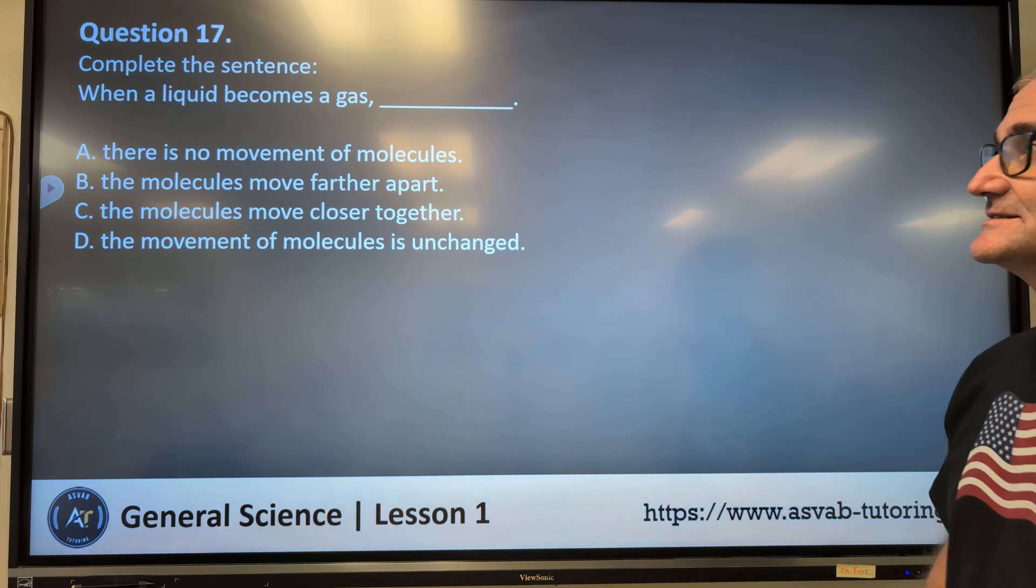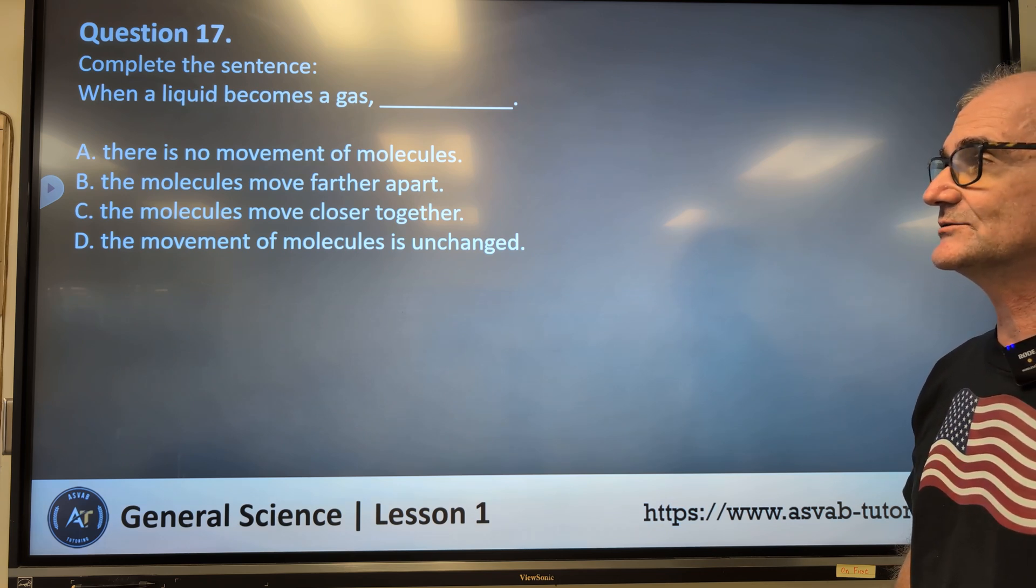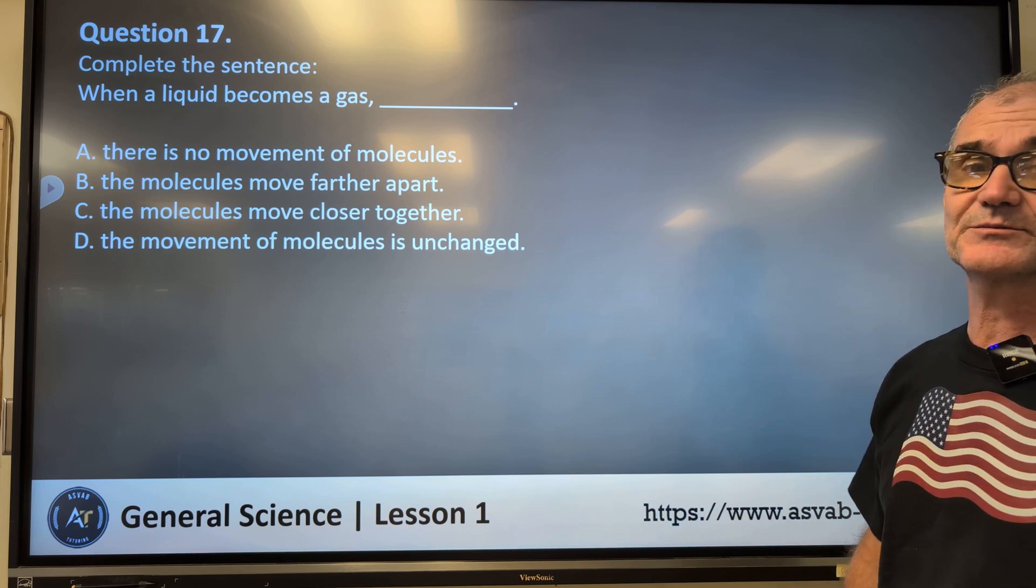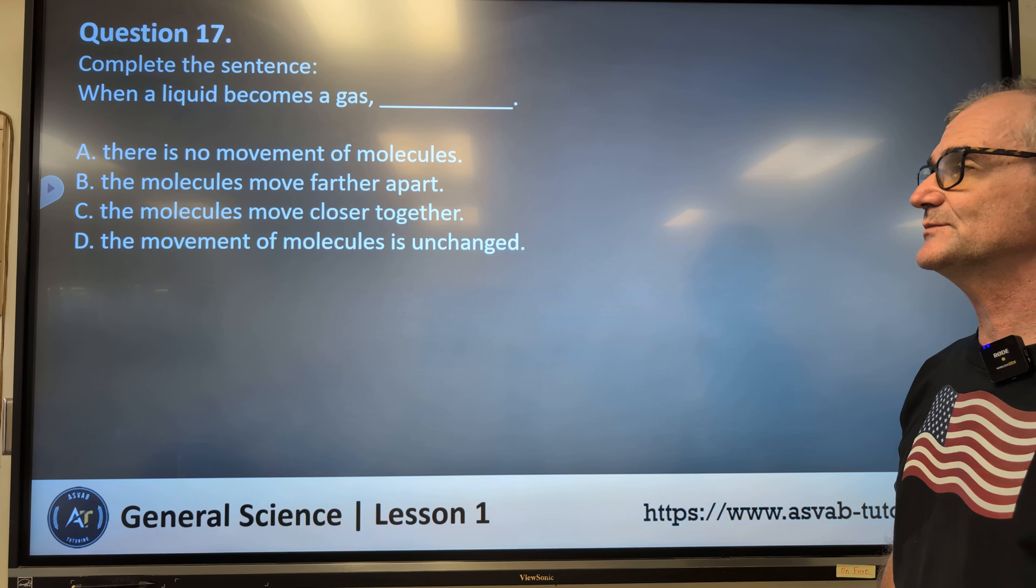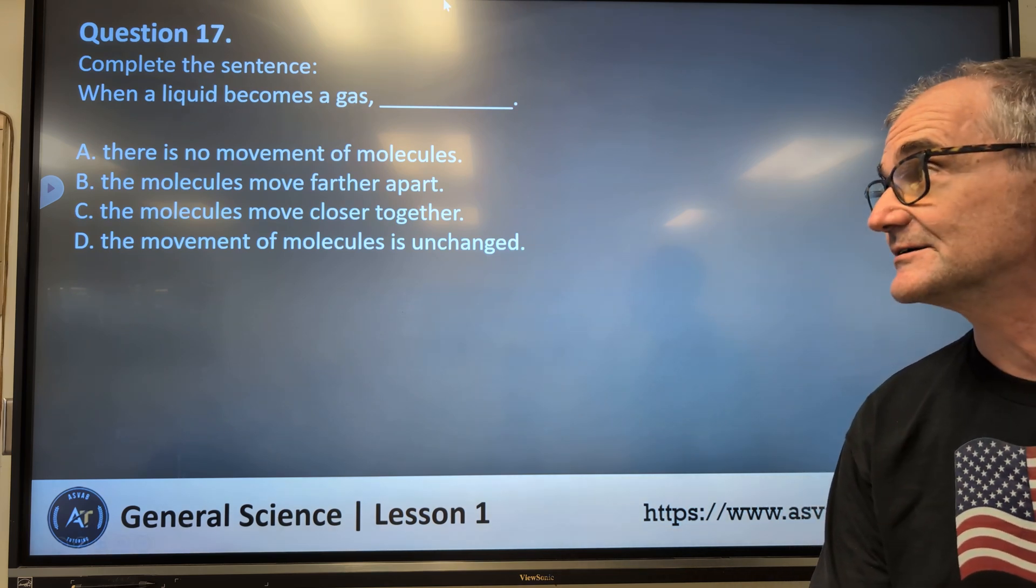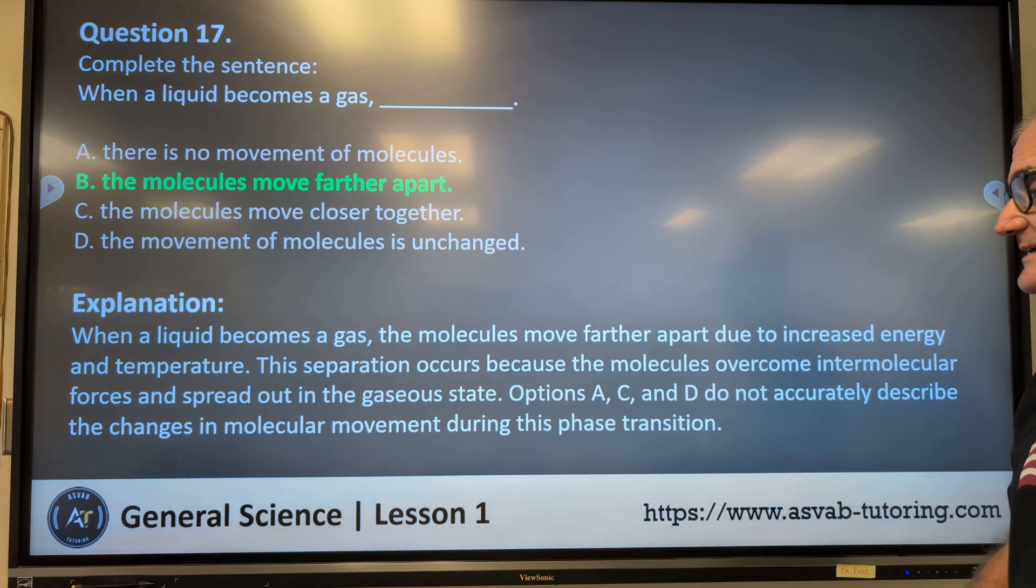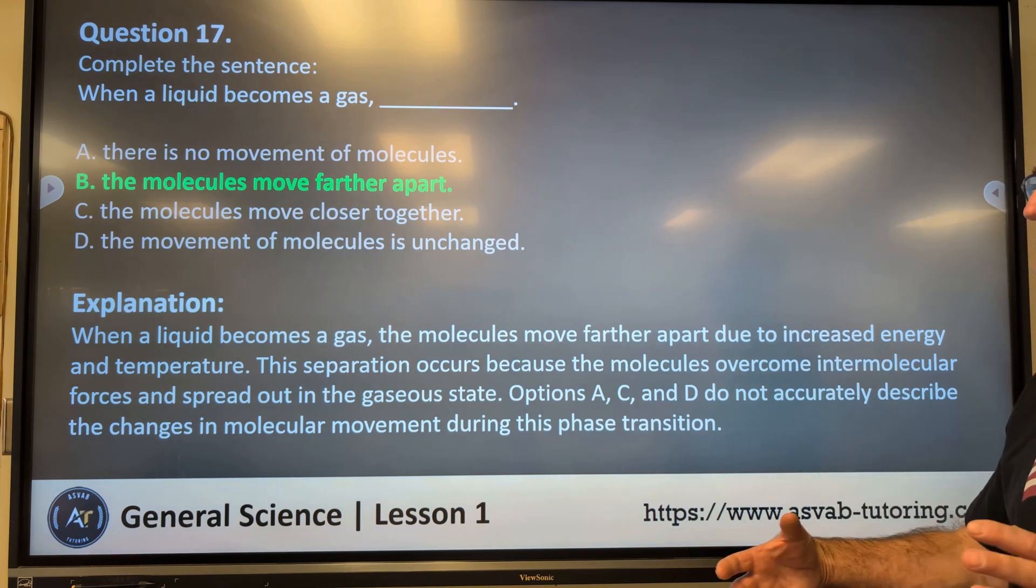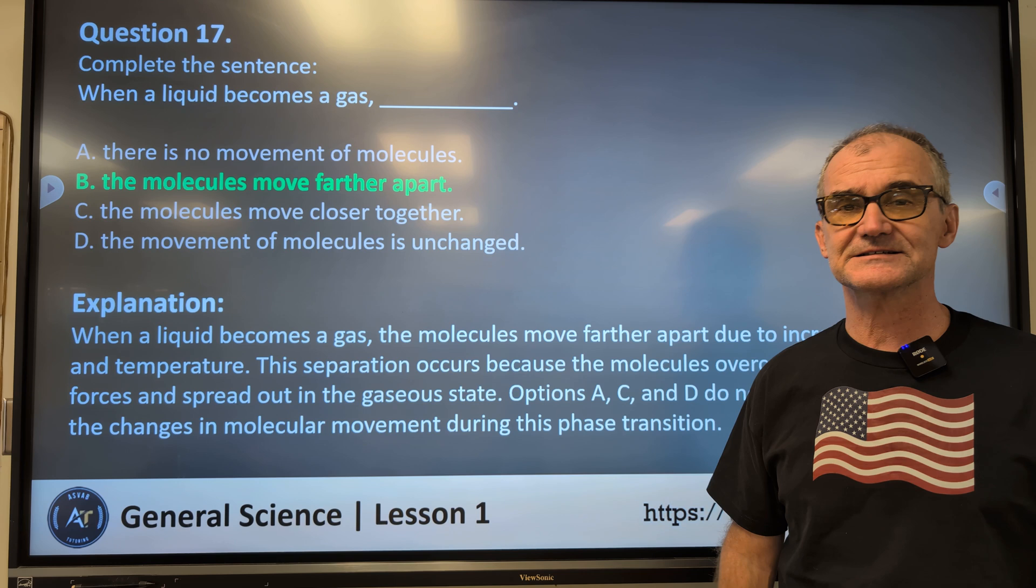Question number 17. Complete the sentence. When a liquid becomes a gas, there is no movement of molecules. The molecules move further apart. The molecules move closer together. The movement of molecules is unchanged. So the correct answer on number 17 is B. The molecules move further apart. When a liquid becomes a gas, the molecules move further apart due to the increase in energy of temperature. This separation occurs because the molecules overcome the intermolecular forces and spread out in a gaseous state.